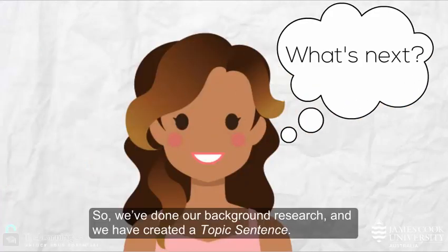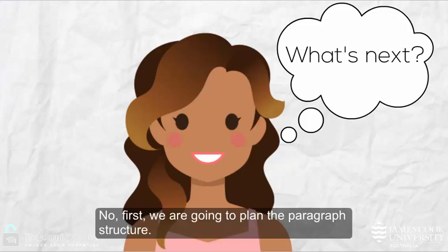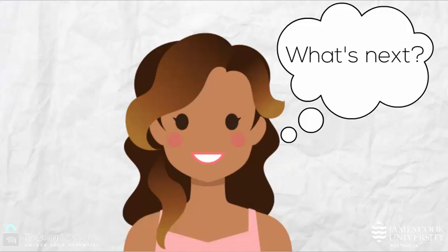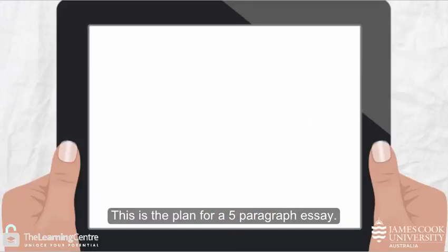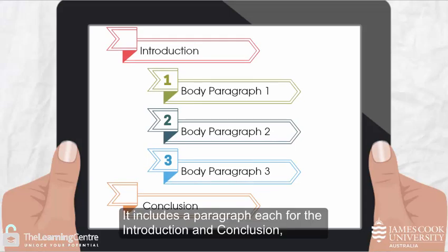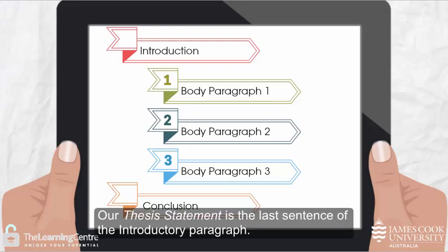So we've done our background research and we have created a topic sentence. What's next? Do we start writing? No. First we are going to plan the paragraph structure. In an academic essay each sentence has a purpose — there are no empty sentences. This is the plan for a five paragraph essay. It includes a paragraph each for the introduction and conclusion and three paragraphs in the body. Our thesis statement is the last sentence of the introductory paragraph.